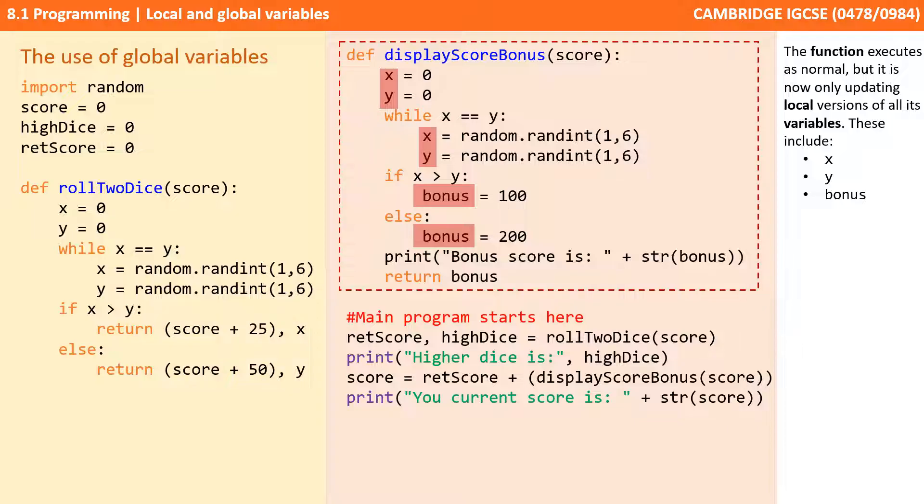The function executes as normal, but it is now only updating local versions of all its variables, and again these include x, y, and bonus.